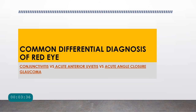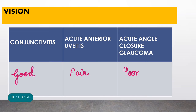The three most important differential diagnoses of red eye we will differentiate are conjunctivitis, acute anterior uveitis, and acute angle closure glaucoma.